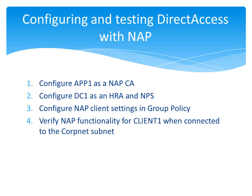Then, when clients are connected to the CorpNet subnet, we're going to verify NAP functionality in two ways. First, we're going to see that when client 1 is compliant with system health requirements, it has an installed health certificate. We're also going to test a NAP behavior called auto-remediation. We're going to deliberately configure client 1 so that it is no longer compliant with system health requirements, and watch as the NAP client components on client 1 automatically correct that configuration. Specifically, we're going to disable the Windows Firewall for domain networks and watch as it is automatically re-enabled on client 1.